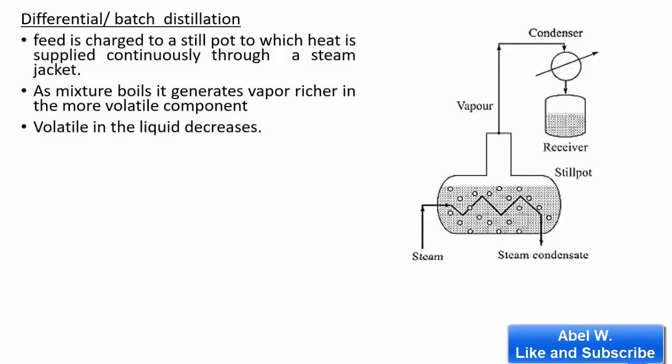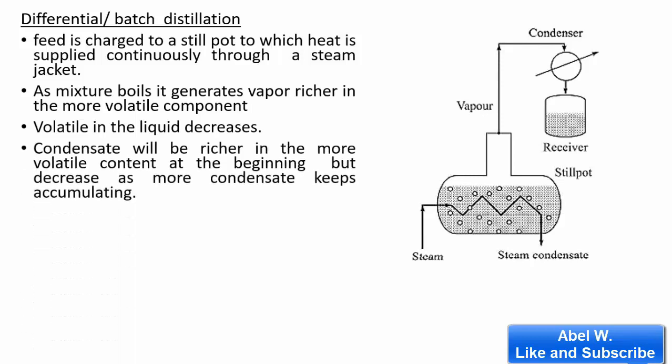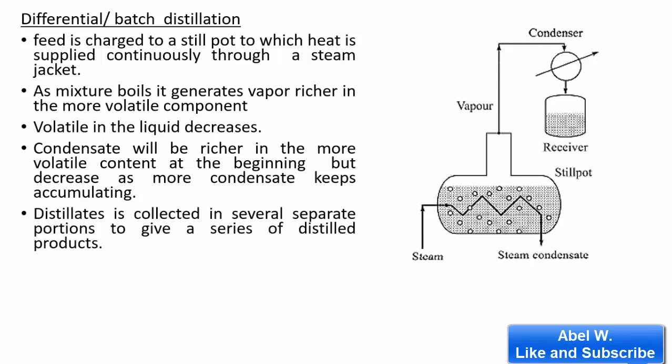The top product or distillate can be collected in a receiver. The composition of the distillate collected varies with time — the condensate is richer in the more volatile component at the beginning but decreases as more condensate accumulates. Therefore, the distillate collected in the receiver can be collected in several separate batches; each separate portion is called a cut.